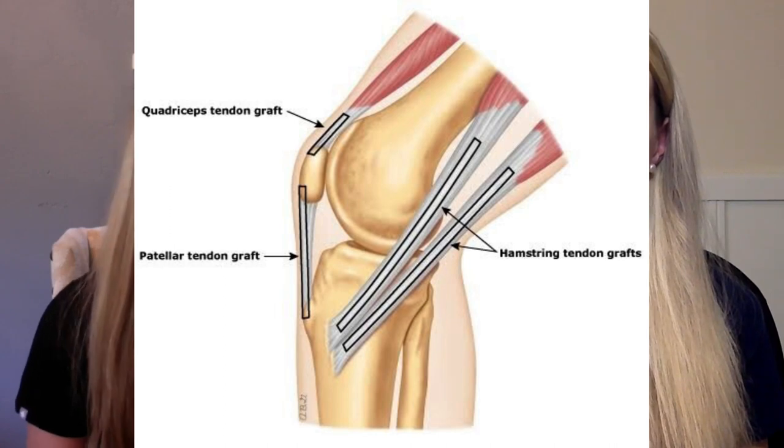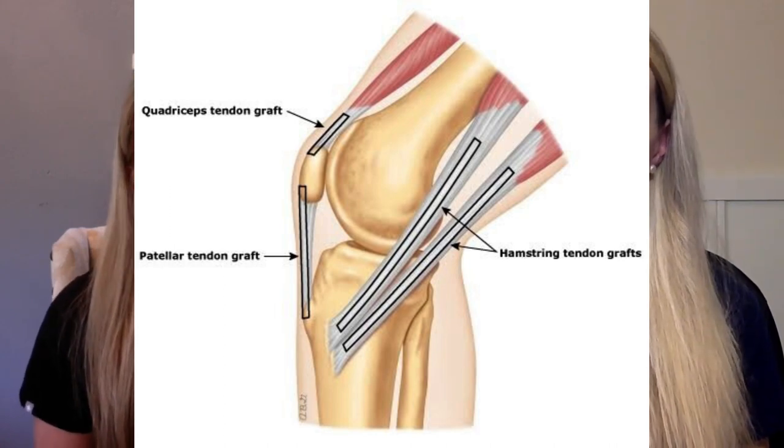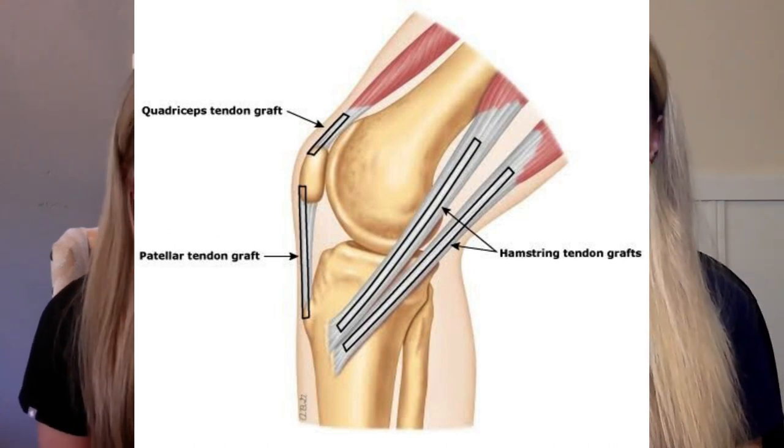Let's move on to autograft for ACL reconstruction. Once we decide on autograft, there are three options that all have good data: bone patellar tendon bone (BTB), quadriceps tendon, and hamstring tendon. When you go to orthopedic conferences there's always debate about which one is ideal, and these debates have gone on for decades. At the end of the day, if you have a lot of surgeons fighting for why their graft is the best, that means they're probably all very good options. Knowing the pros and cons and how they apply to the individual patient is really the best way to go.